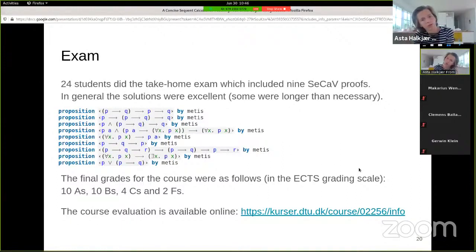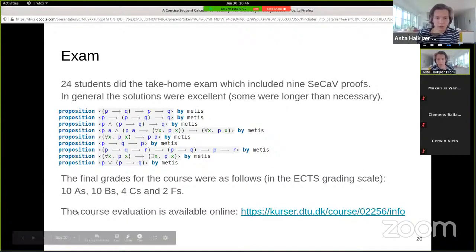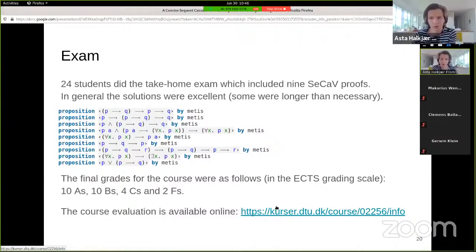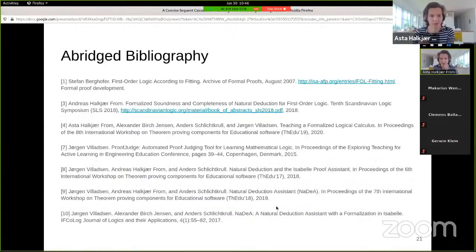So there was an exam in the course, 24 students did the take-home exam, there were nine proofs in this system where they write, we give them a formula like this and they write it in Isabel. And in general, the solutions were excellent. Some proofs were a little longer than necessary, but most of them did excellent work. And the final grades were also very good, 10 A's, 10 B's, 4 C's, and then there were two F's. And you can see the course evaluation online if you want to. And that actually serves as my conclusion slide. So that's an abridged bibliography. You can see the full one in the paper, but these are the ones that pertain particular to this presentation. So yeah, thank you for listening.